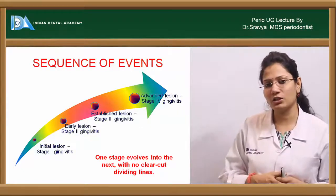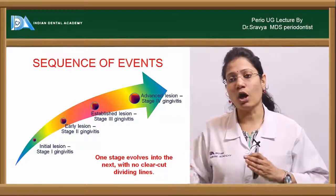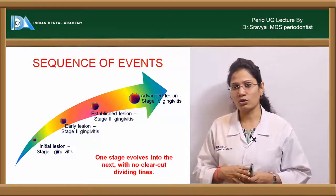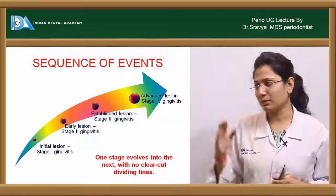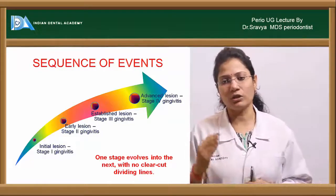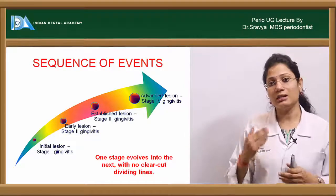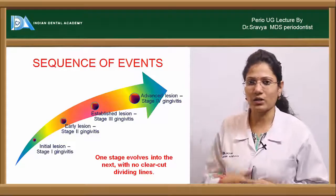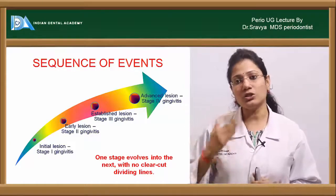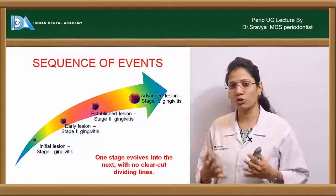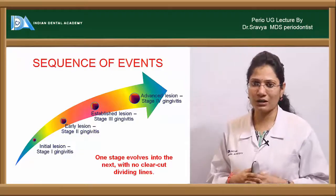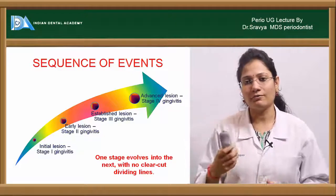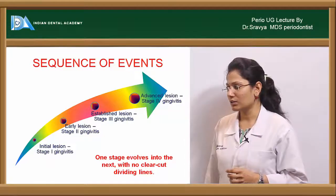All four stages of gingivitis evolve from one to another. If you are able to control the plaque scores at the level of your early lesion or established lesion, then it does not progress to periodontal diseases. But if you do not have meticulous control of oral hygiene measures, each stage evolves from one another, finally reaching periodontal diseases.